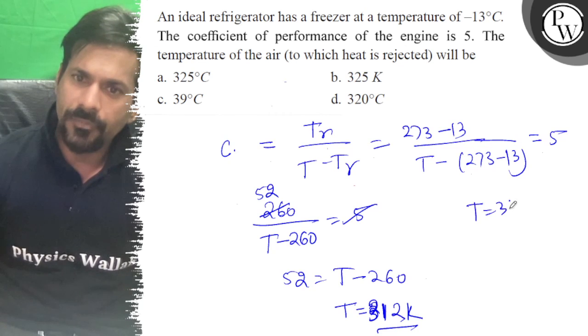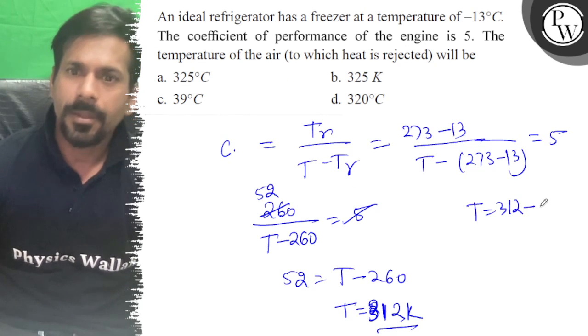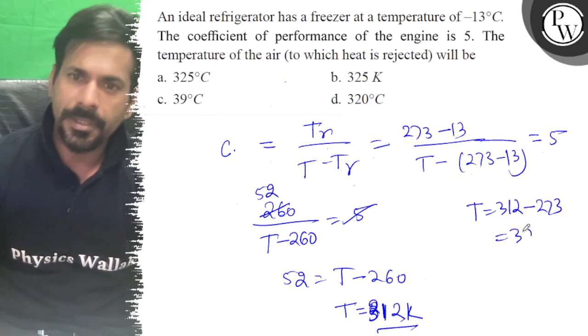That is, T is equal to 312 minus 273. That is 39 degrees.